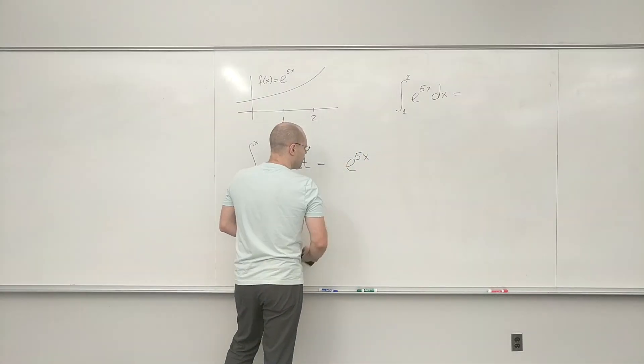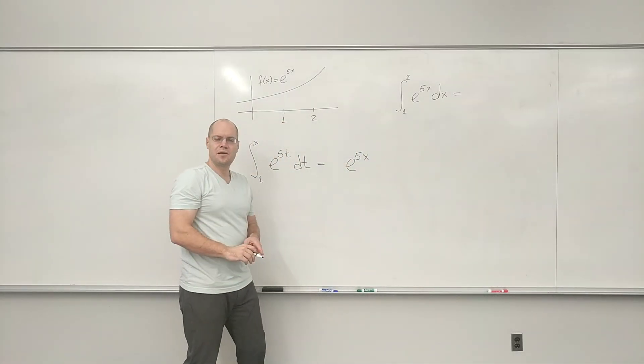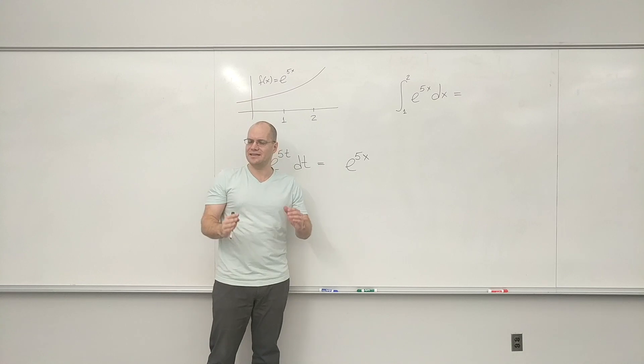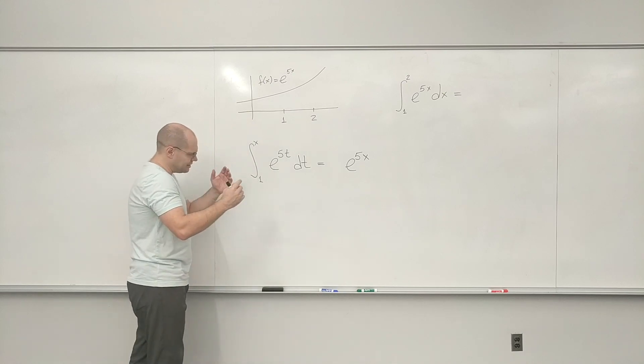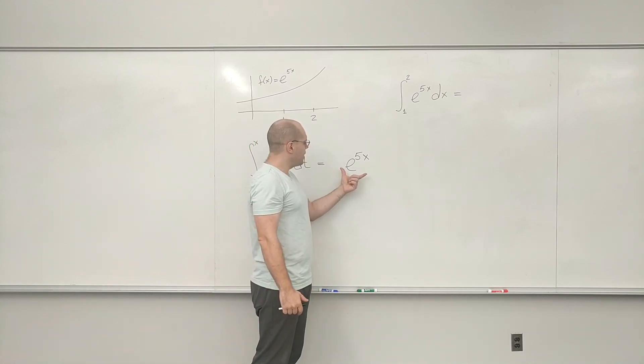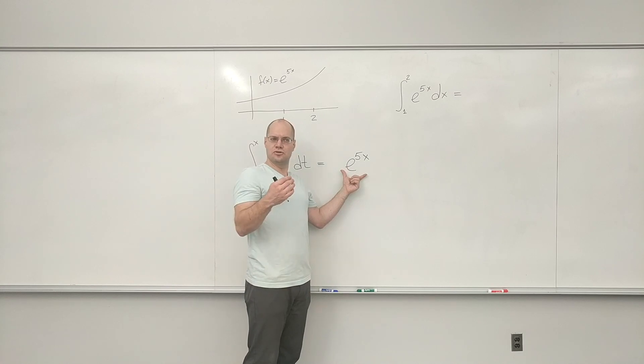My initial guess was e to the 5x, based on nothing else but the fact that the derivative of an exponential is an exponential. So I'm just going to guess it's the same exponential. And now that I have this guess, I want to test it. Is it exactly right?